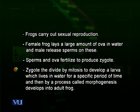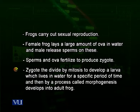The larva feeds on different organisms present in water, such as mosquito larvae, phytoplankton, zooplankton and others, and grows actively. After some time, by a process called morphogenesis, it is converted into an adult frog. This reproduction also takes place by sexual means — both male and female organisms are involved.